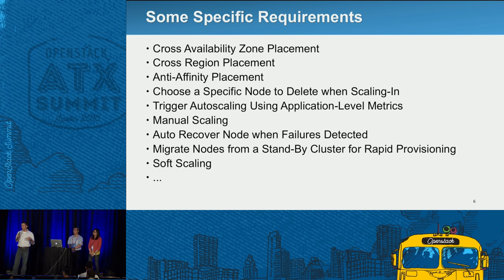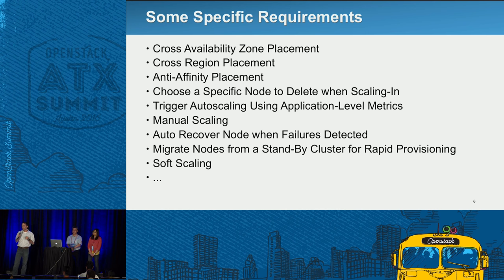Choosing a specific node to delete when scaling in is important. A lot of times when we talk about auto-scaling, we think only about expanding when demand goes up, but equally important — especially when you attach dollar signs — is scaling back down. Some applications want to make very opinionated choices about which nodes they kill. For example, when scaling up you may have placed new nodes in a more expensive I/O region because I/O was your bottleneck. When demand falls, those are the nodes you want to get rid of first.